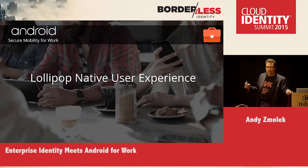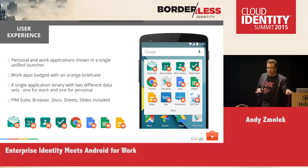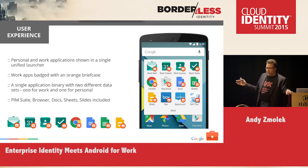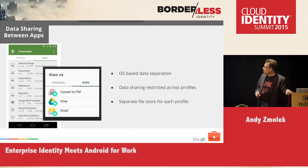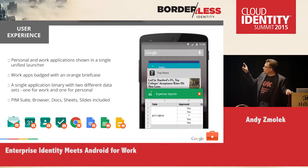On Lollipop and greater with the work profile, in general there's no modified application, no wrapping — nothing like this is required by a third-party app developer. It's far superior in the long run. But to allow older Android devices back to Ice Cream Sandwich to have these capabilities, there are SDKs and capabilities that enterprise app developers may want to take advantage of with the Android for Work app version. You'll never have both at the same time.